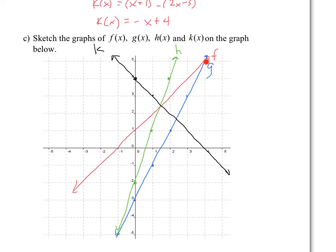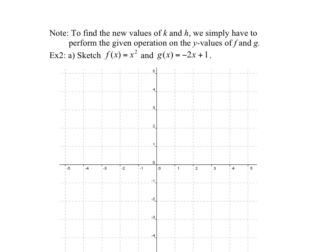So f, which is 5, subtracting g, which is 5, gives us 0. We have f, which is 3, subtract 1 — 3 minus 1 is 2. And 1 minus minus 3 is 4. So all you have to do to find the values of k is subtract f minus g, the y values, and to get the values of h, because it was a sum, you add the values of f and g.